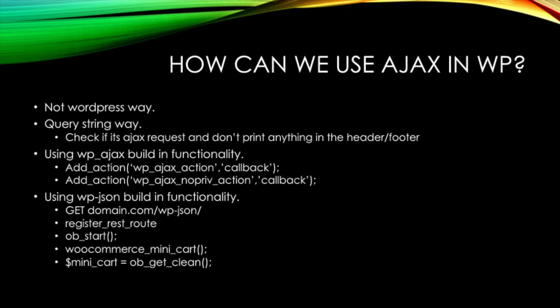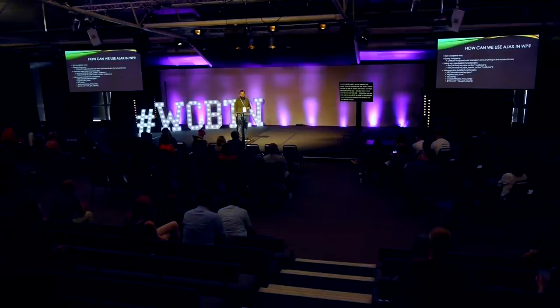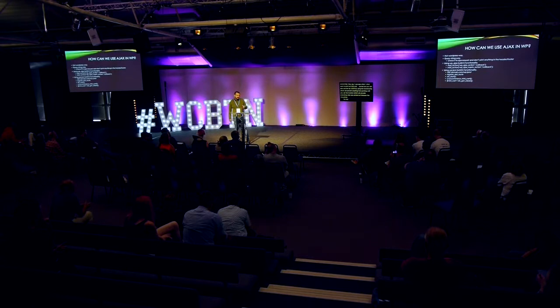And then there is WP JSON, which is now in the WordPress core. It can be accessed through any domain name slash 'wp-json'. We can register new routes. A lot of people ask me when should I use WP Ajax versus WP JSON. They say: use WP Ajax to print out HTML, and WP JSON to retrieve JSON — which is correct. But you can also use WP JSON with the 'ob_start' function, which prevents anything from printing until you call 'ob_get_clean', providing everything printed between those two calls. That's how you can include HTML into the JSON response.